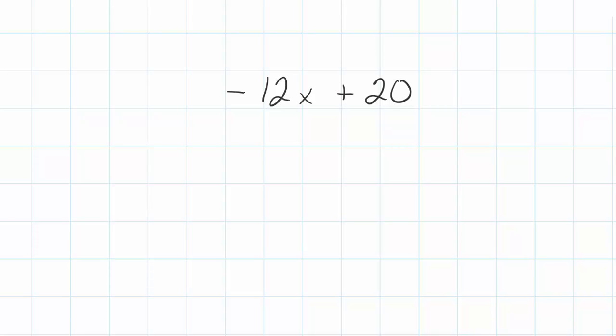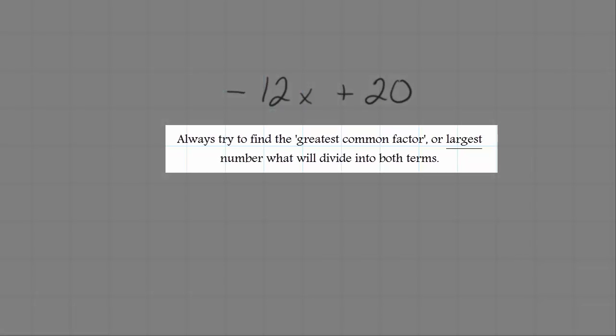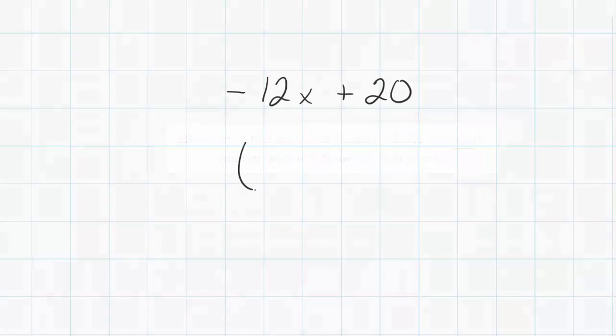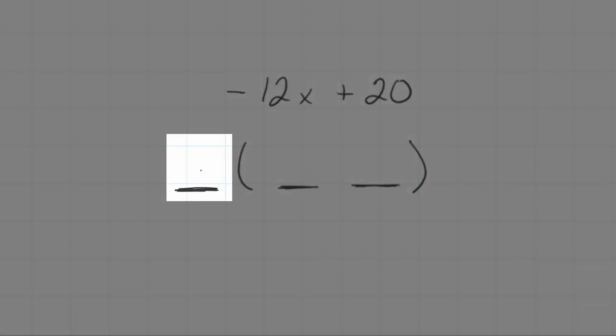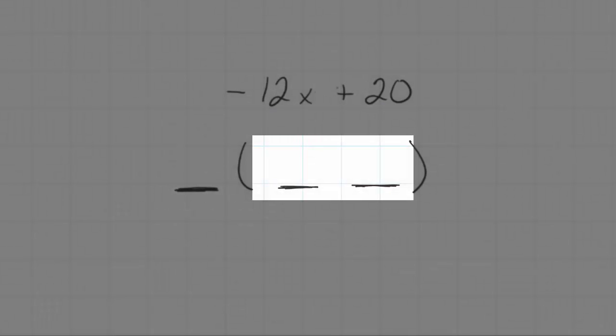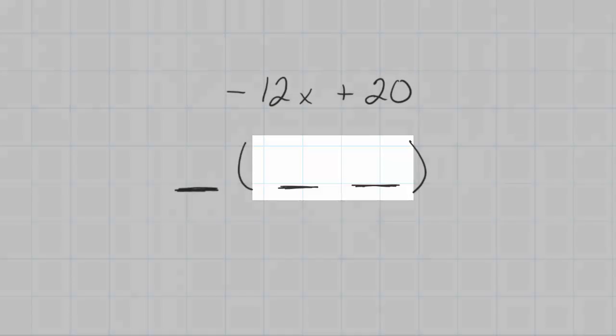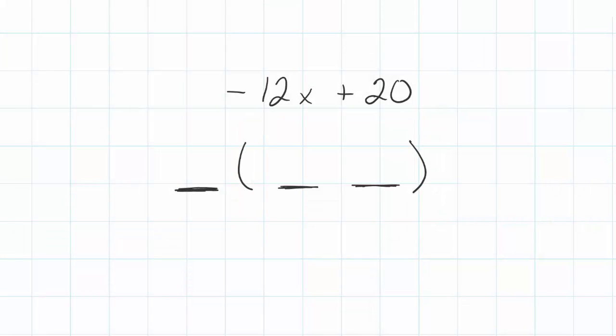If we start with an expression like negative 12x plus 20, we know that 2 can divide into both 12 and 20, but we want to look for the largest number that can divide into both of these terms if possible. Remember it's going to look like a distributive property question when we're done, so I have the kids draw parentheses and we can put some underlines here, knowing that we're going to have a term on the outside of the parentheses and we're going to have in this case two terms inside the parentheses. What can divide into 12 and 20 evenly and be larger than 2? It's going to be 4, so I'm going to put that outside of the parentheses right away.